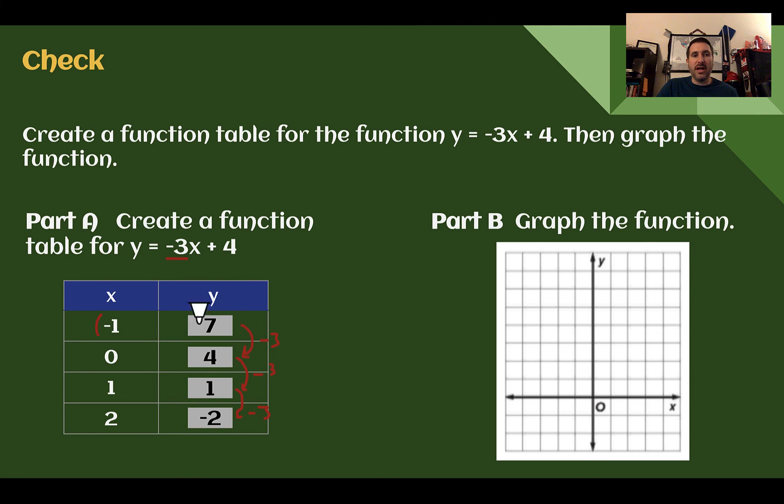Now let's graph this. So I have my coordinate negative 1, 7. So negative 1, 1, 2, 3, 4, 5, 6, 7 would be up here. 0, 4. So 0 over 4 up. 1 over 1 up. 2 over and down 2. There's my points. I'm not quite done yet. I do need to connect these with a straight line as best as possible. So that would go in that direction. And there would be my linear function. Hopefully you can use a straight edge to make it more of a straight line.